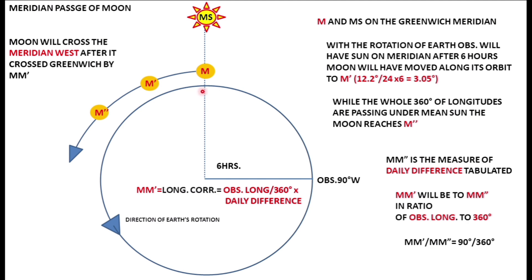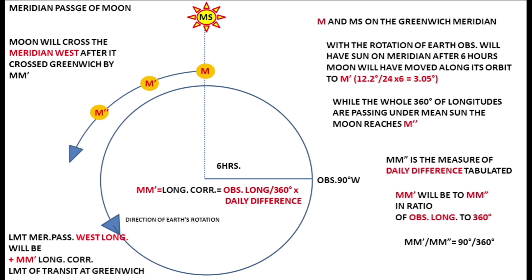For an observer in the west, the Moon crosses their meridian after it has crossed the Greenwich Meridian by the amount M-M-dash. So the LMT of meridian passage for a west longitude is not the same as the Almanac value — you must add the longitude correction to the LMT of the Greenwich transit.